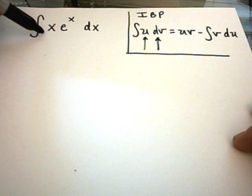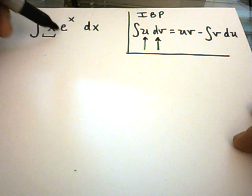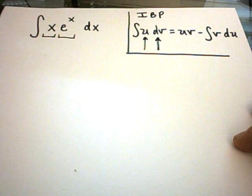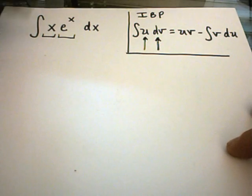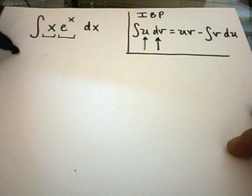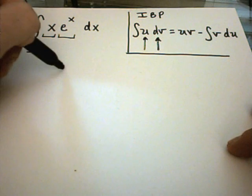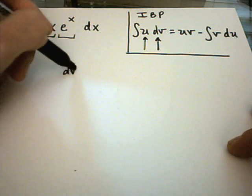In this problem I see two things: an x and e to the x. We'll attach the dx to one of those. I have to pick one of those to be u and one to be dv.